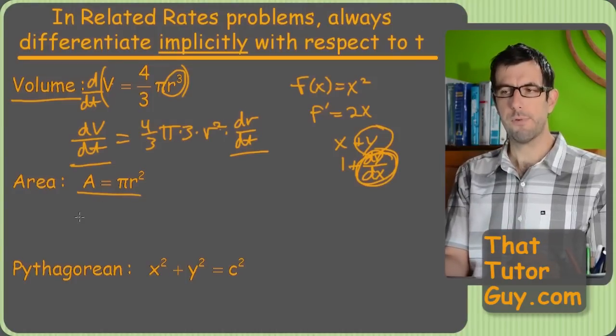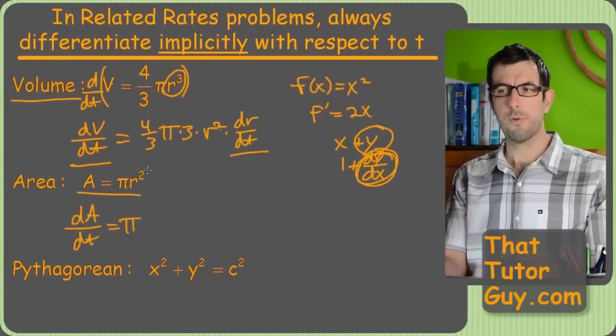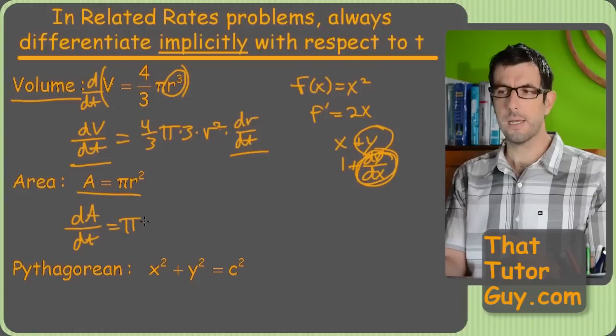So, now let's do this one. Derivative of area is just dA/dt. And then, derivative of r squared, just like last time, is going to be 2r dr/dt.